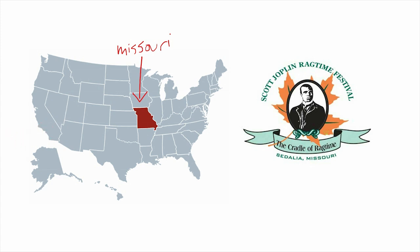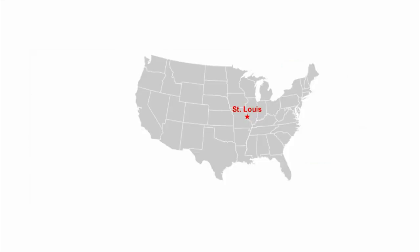Ragtime music became popular and spread all the way across America. Its central hub was in the state of Missouri, where they even hold an annual Scott Joplin Ragtime Festival because Joplin lived and taught there for a while — in Sedalia, where the festival is held, and also in St. Louis, the larger city. St. Louis, Missouri was a popular center for ragtime. Since it's located in the central USA, it was a hub for travelers of all kinds, and a piano player could make a decent living performing at bars and clubs there.